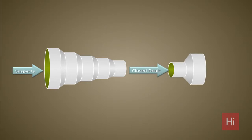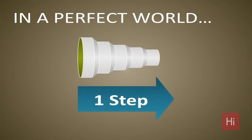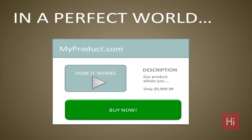Once you've got a closed deal, you then want to do the reverse — expand the usage and potentially get some upsell. In a perfect world for all of you as marketers, you'd be able to get all of that done in one single step. Imagine putting up a website with a small video of your product, saying it costs $9,999 — buy it now. So why does this not work for your particular products?